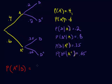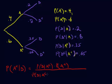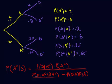Bayes' theorem says this is going to be: the probability of D given A complement times the probability of A complement, divided by the probability of D given A complement times the probability of A complement, plus the probability of D given A times the probability of A. In all cases, the way you get to D is by going up either A or A complement — so the denominator accounts for both paths to D.